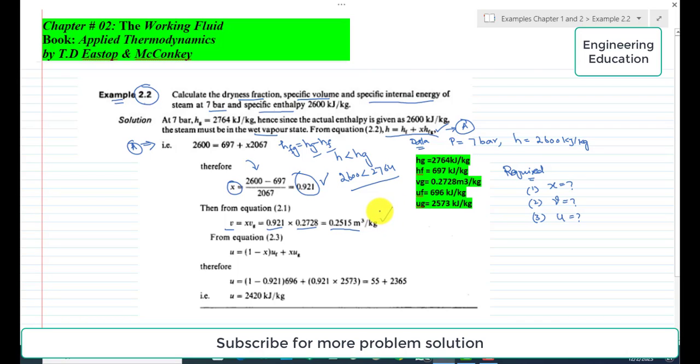Now to find the value of specific internal energy, we use this expression: u = (1-x)·uf + x·ug. 1-x where x = 0.921, uf = 696 according to the steam table, and ug = 2573. So 0.921 multiplied by 2573, if we simplify this we get u = 2420 kJ/kg.